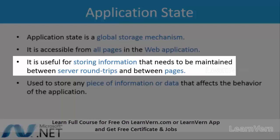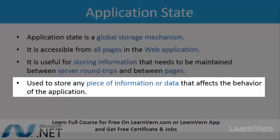It is useful for storing information that needs to be maintained between server round trips and between pages. If you have sent a request to a server and the server sends you a response, and in between there is some data change, you can store it in the application object. It is used to store any piece of information or data that affects the behavior of the application.